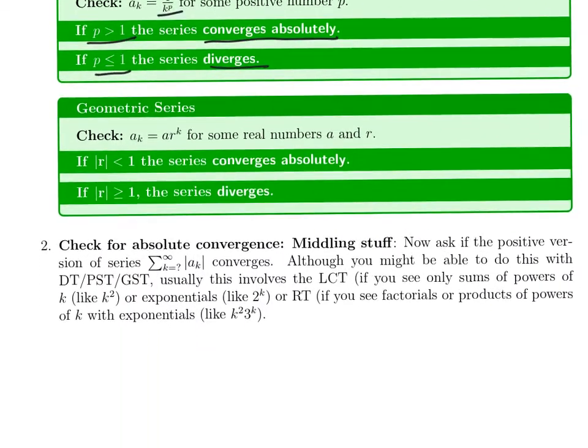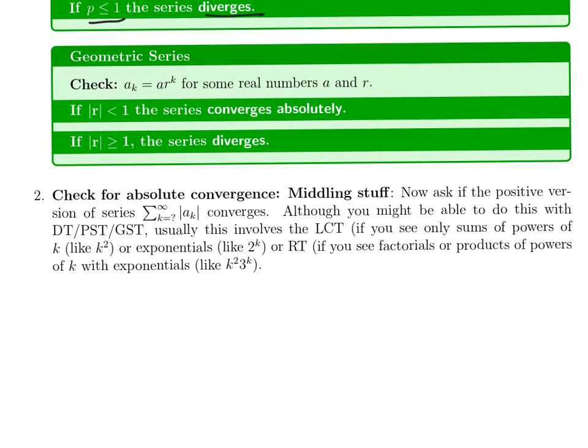Other easy possibility is it could be a geometric series. If you recognize that it's some number times another number raised to the index, that's a geometric series. If the number being raised to the index is between one and minus one, not counting one and minus one itself, then the series converges absolutely. If it's more than one or less than negative one or equal to one or negative one, the series diverges.